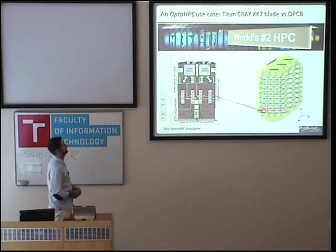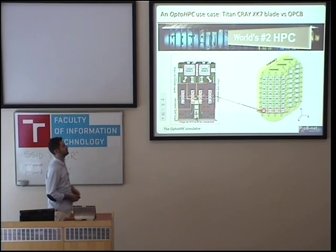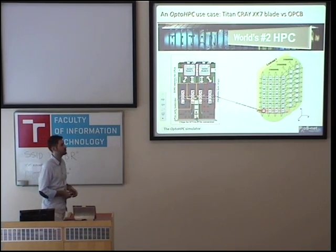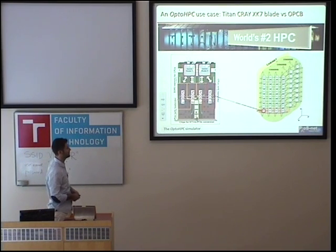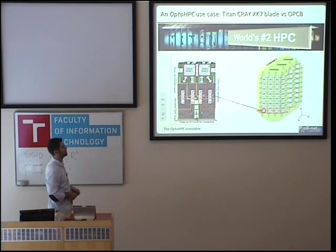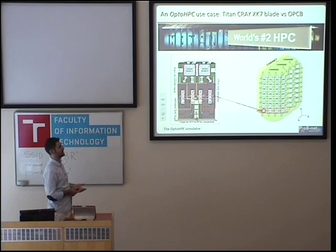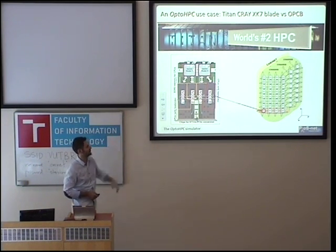Now let's proceed with the OptoHPC use case, where we actually compare a system that follows the Titan Cray's specifications — which is the world's fastest supercomputer — with a system that utilizes the Foxtrot technologies, where we have designed an optical PCB. Here we have the example of the blade used in the Titan supercomputer. We have four computing nodes and two Gemini routers. At the right, we can see a 3D torus topology example, where we have a cabinet organized in three chassis, and in each chassis we have eight PCBs, with the computing nodes visible at the bottom.